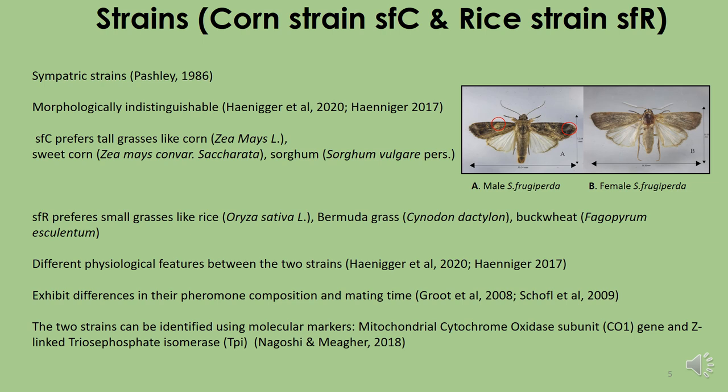The two strains can also be identified using molecular markers, including the mitochondrial cytochrome oxidase one subunit gene and triose phosphate isomerase.